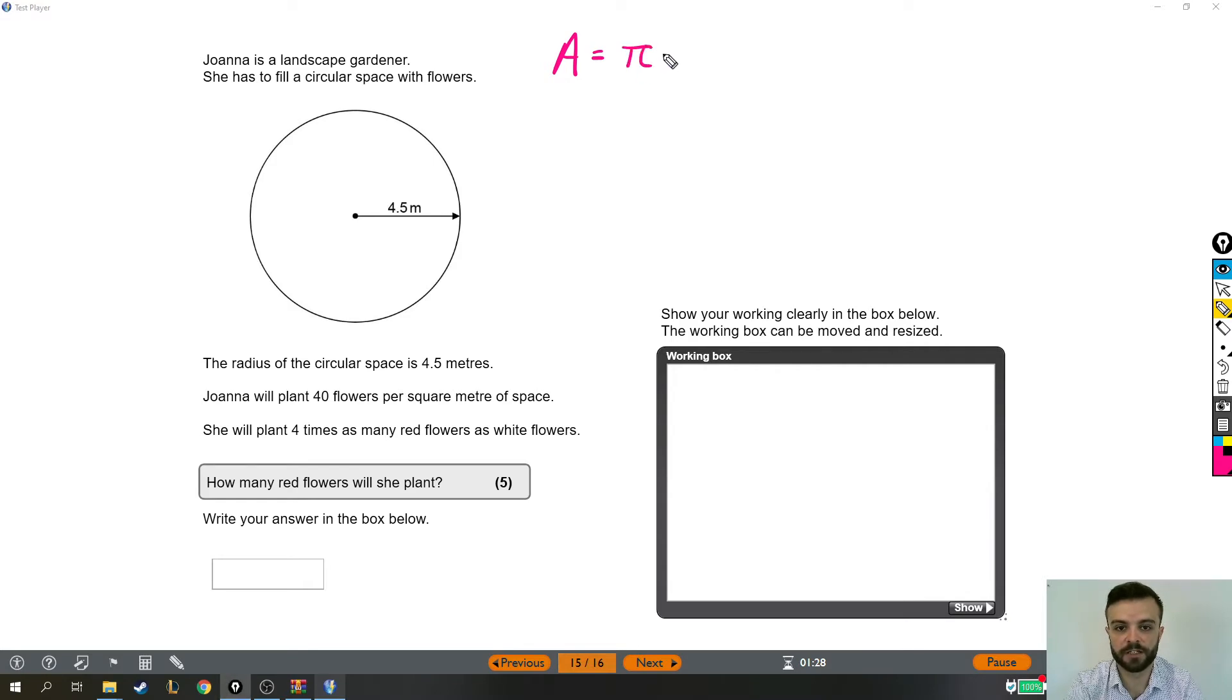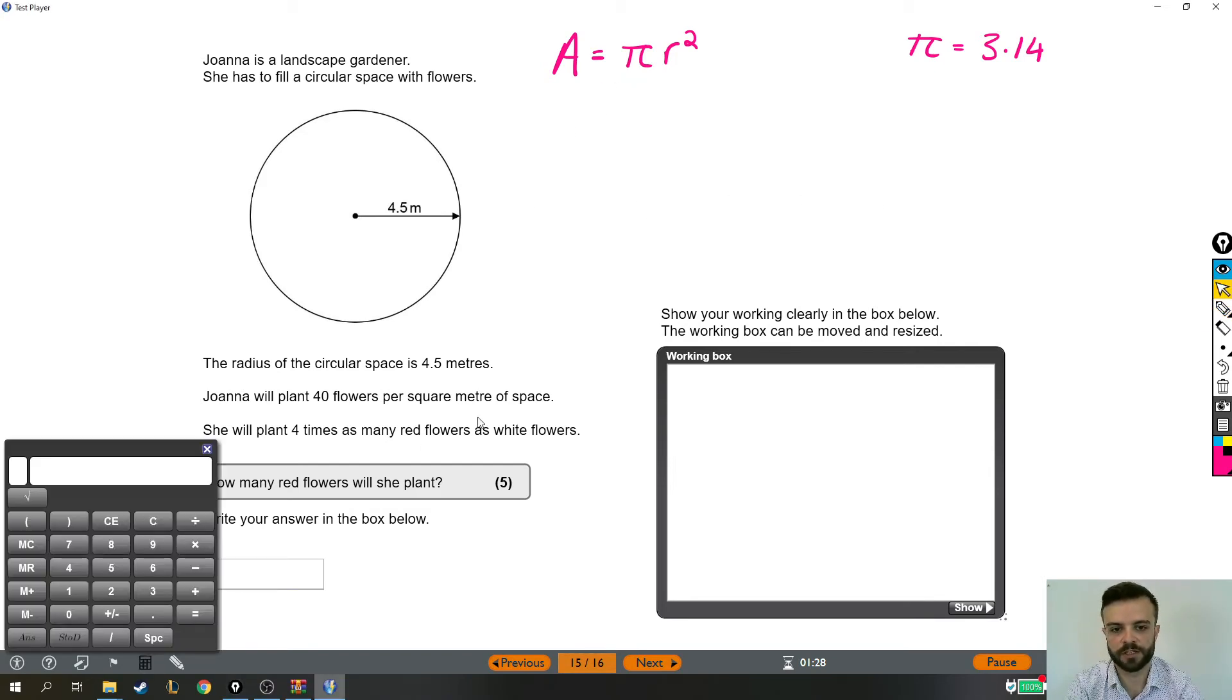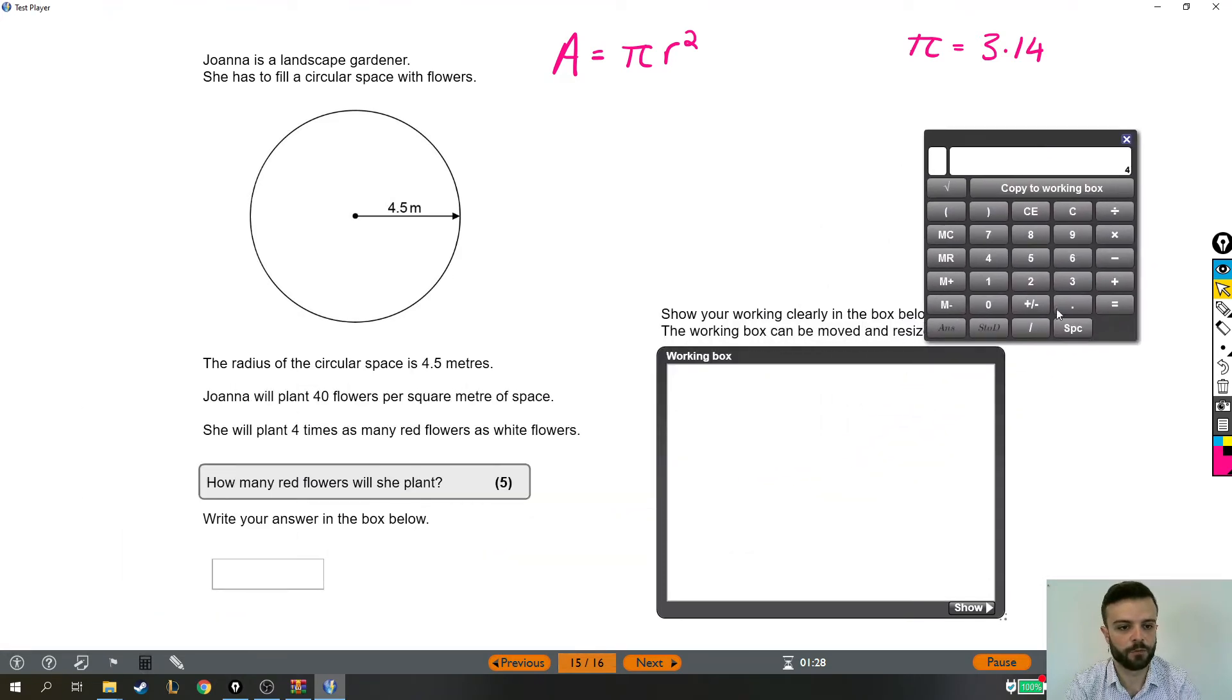Area is pi times the radius squared. Now we've been given the radius and this is a formula that you do need to know. We need to do pi times the radius squared. Just as a reminder, pi is just a number. It's approximately 3.14 and it's fine to use 3.14. Because it would take us a really long time to write out 3.14 every time, we just use this symbol, pi. So to work out the area we need to do 3.14 times 4.5 squared. So the first thing I'm going to do is work out what 4.5 squared actually is. And 4.5 times 4.5 equals 20.25.